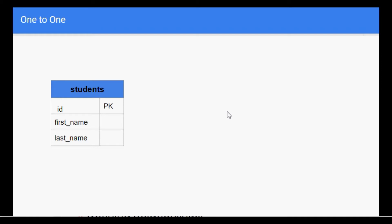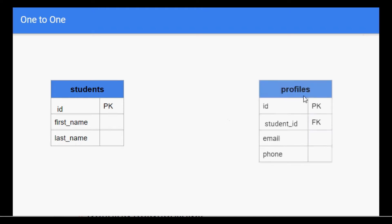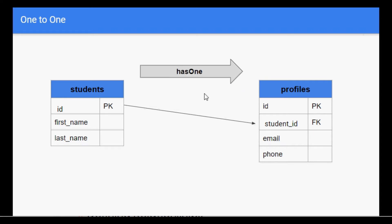Suppose we have a students table with id as the primary key and two other columns, first name and last name. We have another table, profiles, which has some extra detail about these students, and both tables are linked by the foreign key, which is student_id in the profiles table. For each row in students, we can have at most one row or no row in the profiles table. In Laravel terms, we define this as: student has one profile, and profile belongs to student.